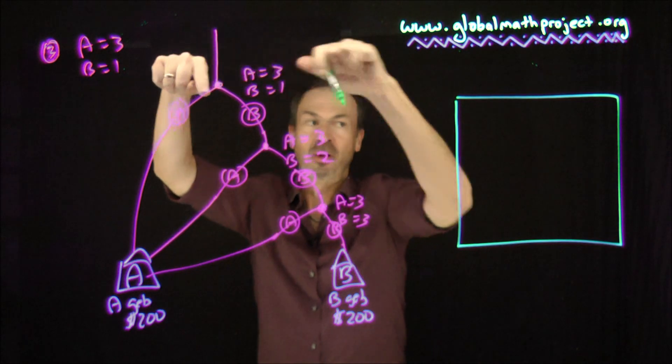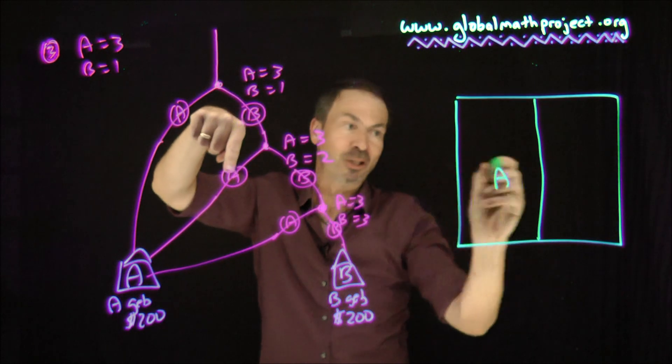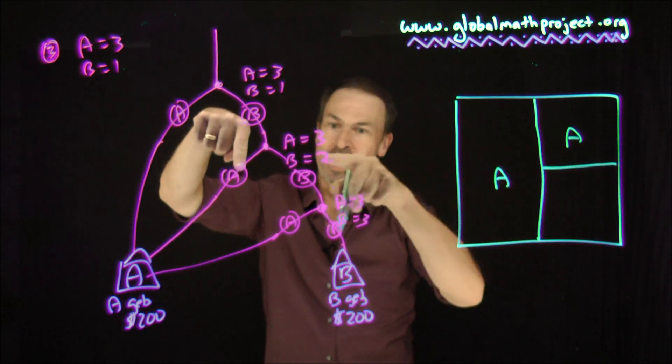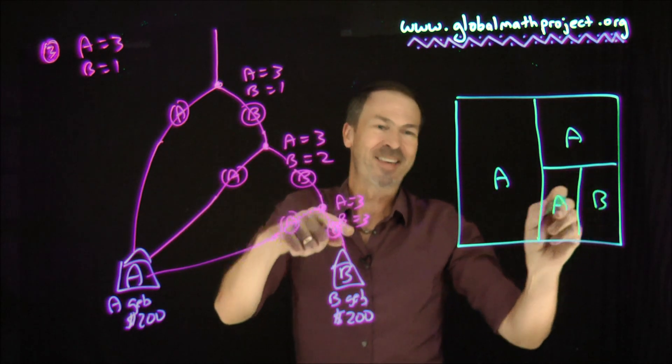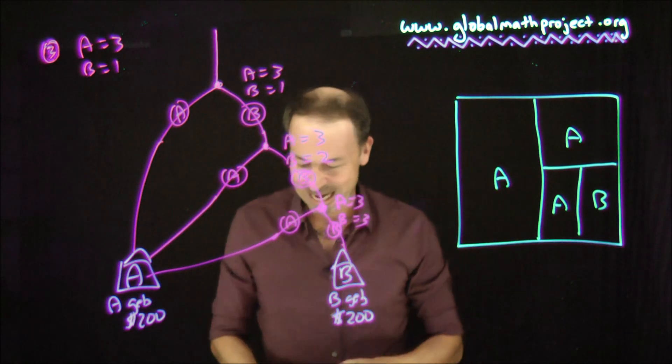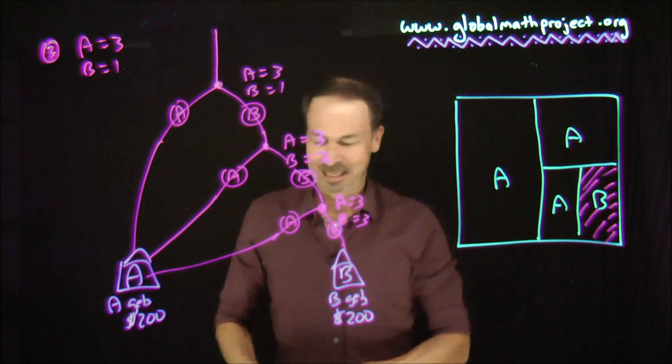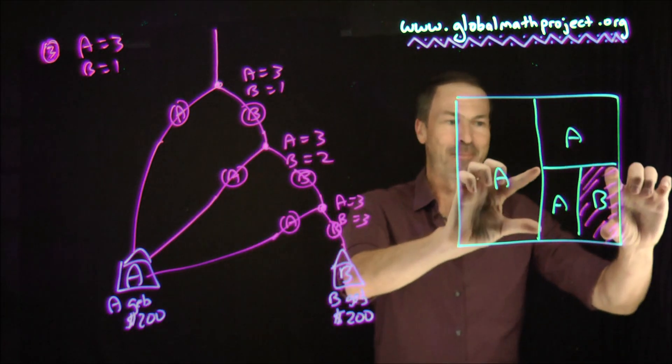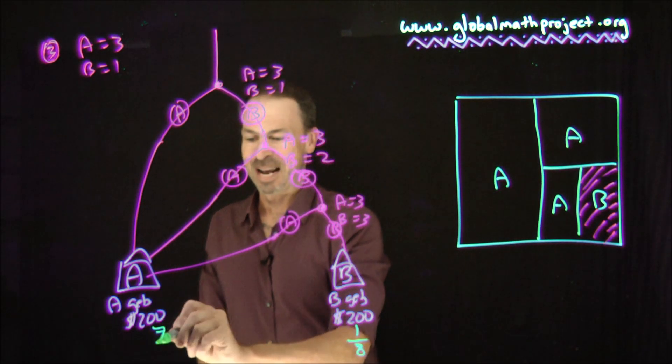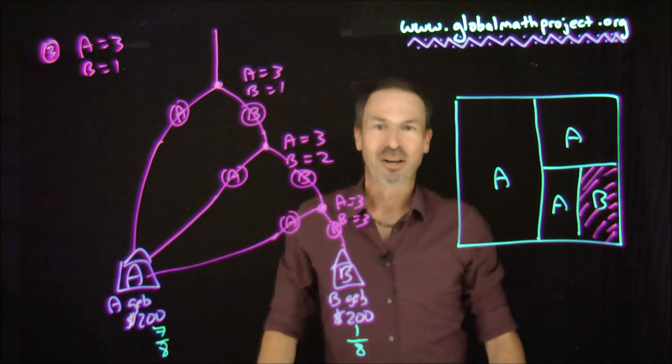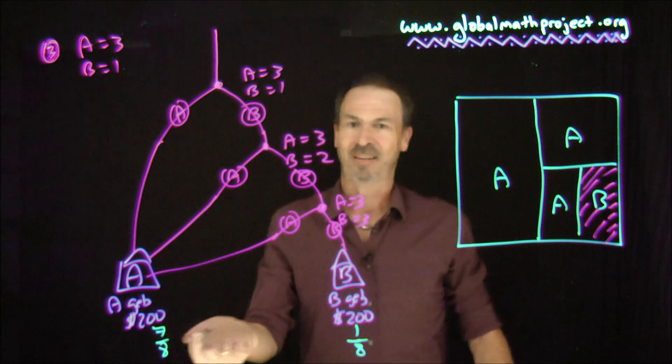So here we go. First of all, we split into two. Half the time Albert wins. Half the time we go on to another game. But if we go on to another game, it splits into two with half the time Albert winning, and half the time we go on to another game, which splits into two with half the time Albert winning or the other half Bilbert winning, finally. I can see that Bilbert is going to be one eighth of the whole square. One eighth chance of winning, seven eighths chance of winning for Albert.